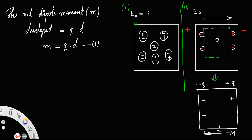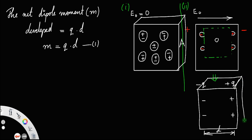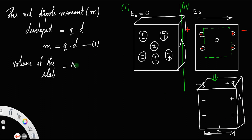You know, this is a slab — it has a volume. This is the cross-sectional area. So the volume of the slab, that is the dielectric slab, is equal to area into thickness, that is a into d — it is a rectangular block.